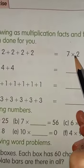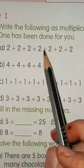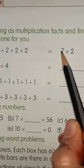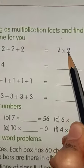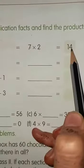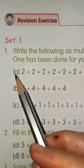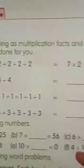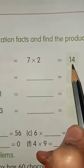7. Then multiplied by, what is the common number here? 2. 7 multiplied by 2. 7 twos are 14. If we add this 2, 2, 2, 2, 2 will get 14 only.